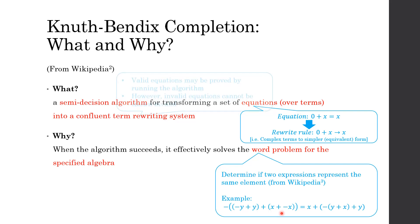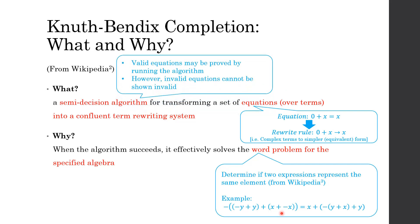So lastly, semi-decision algorithm. What is it? If a valid equation is passed through this algorithm, it may be proved by running the algorithm. However, if an invalid equation is passed through to the algorithm itself, it cannot be shown to be invalid.